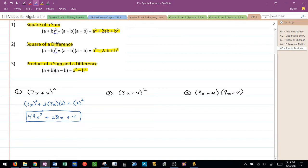Another shortcut is called the square of a difference. I have a square and a subtraction. This is telling me that this is a square of a difference.